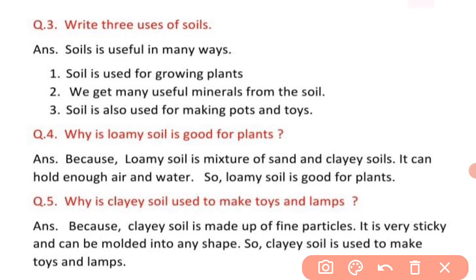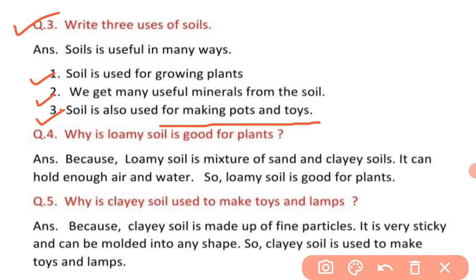Next question: write three uses of soil. First, soil is used for growing plants. Second, we get many useful minerals from the soil. Third, soil is also used for making pots and toys.